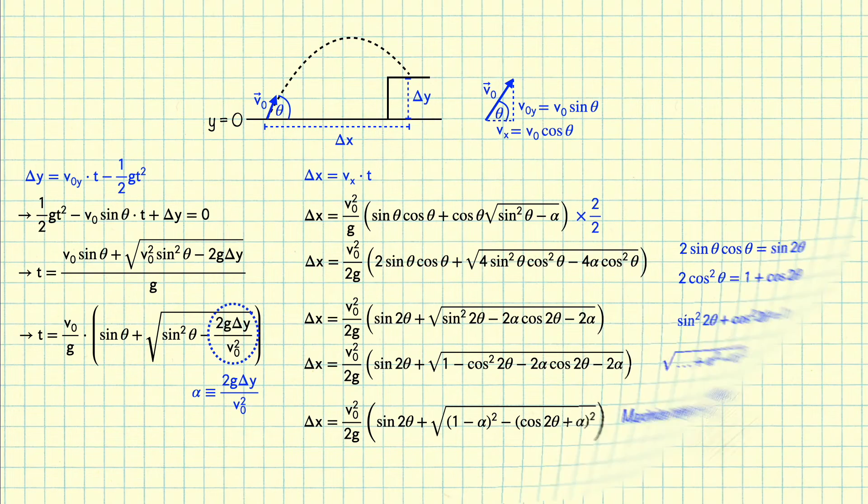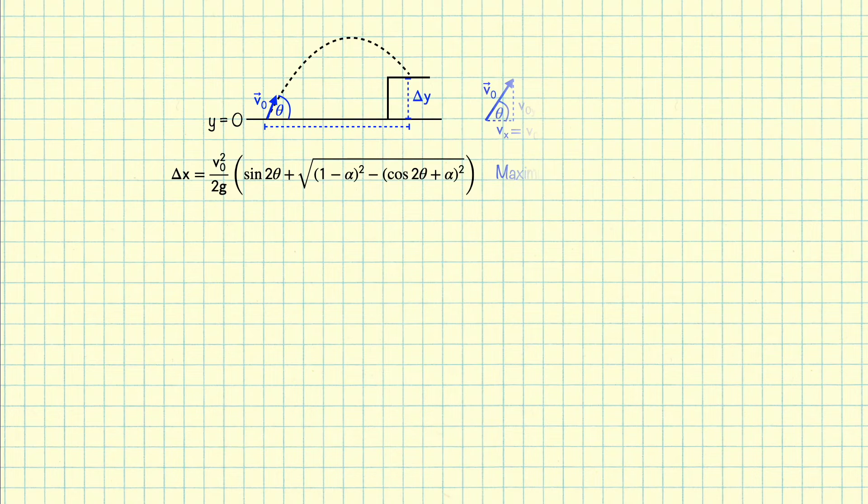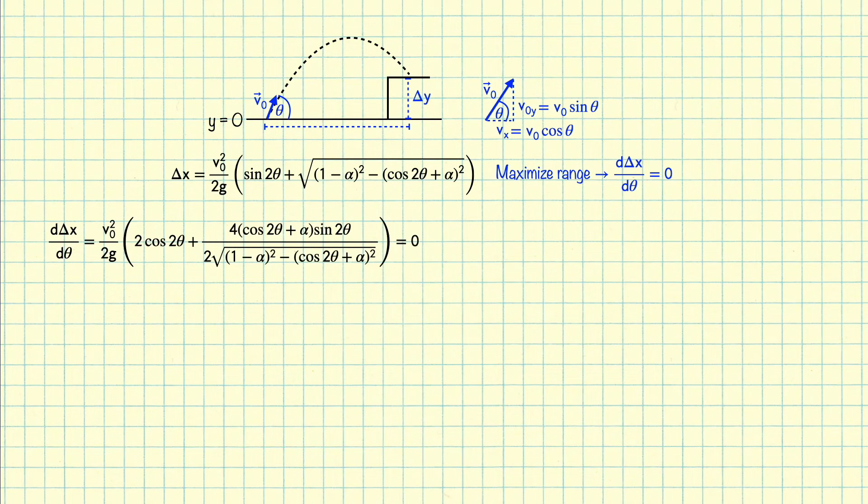So let's summarize what we have. We have our diagram of this trajectory, and we have this expression for delta x in terms of theta, which we now have to maximize by taking a derivative with respect to theta and setting it equal to 0.